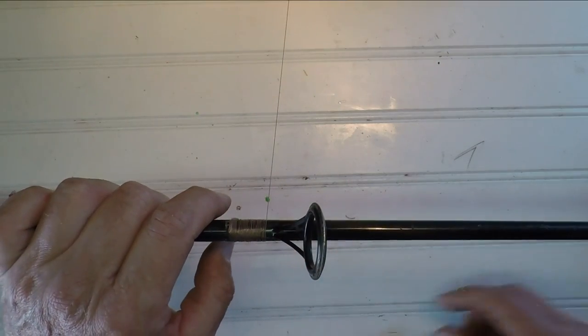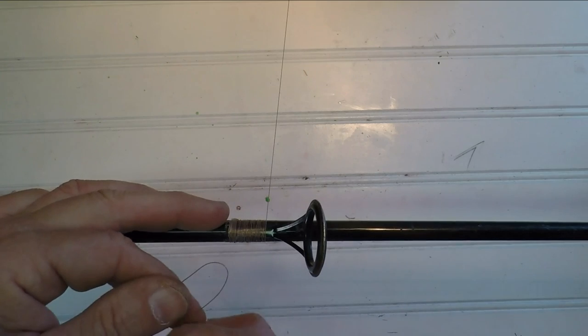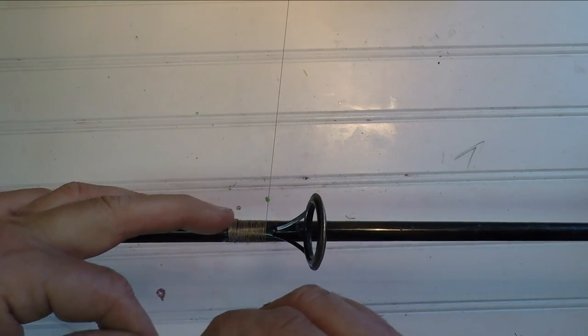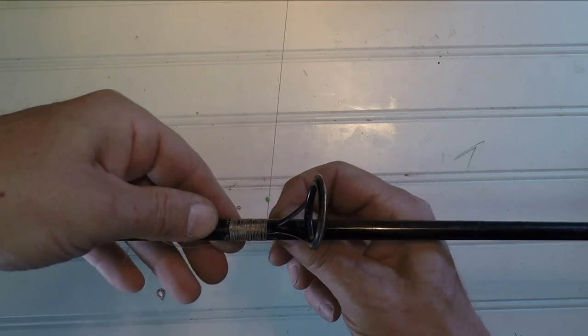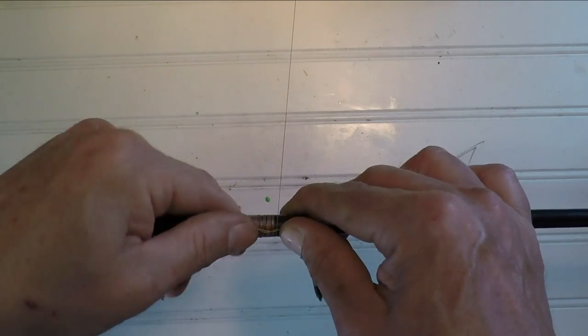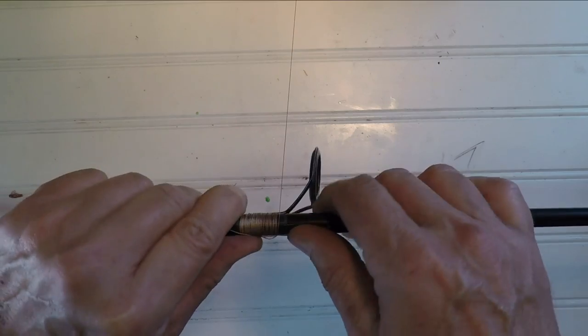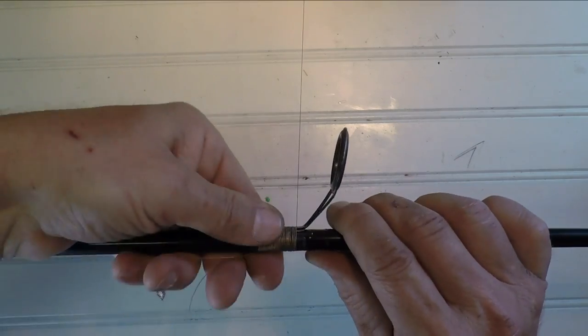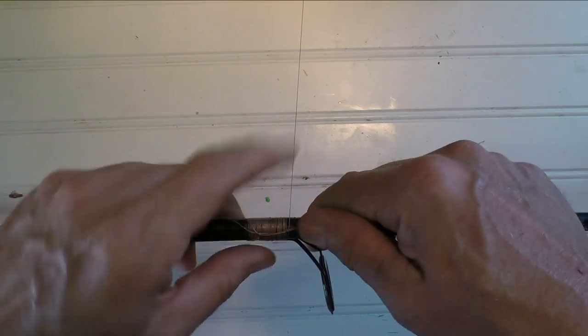Now it's just a matter of trying to wrap as tightly as I possibly can. At this point, I'm starting to get close to the end. So now is when I take that loop I made and I'm going to wrap it in, because I'm going to pull the line through that to finish it off.